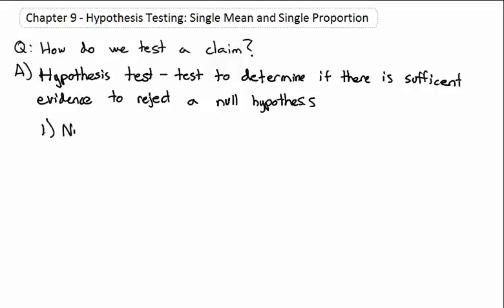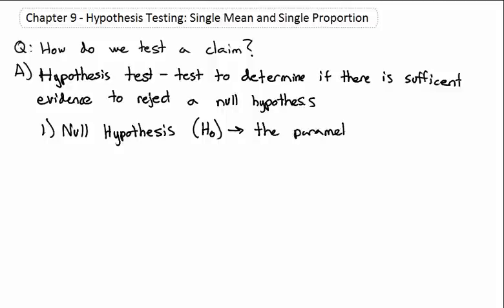A null hypothesis, abbreviated H sub 0, is the assumption that the parameter is equal — note the word equal — to a value. For example, we might assume the average height is 60 inches.